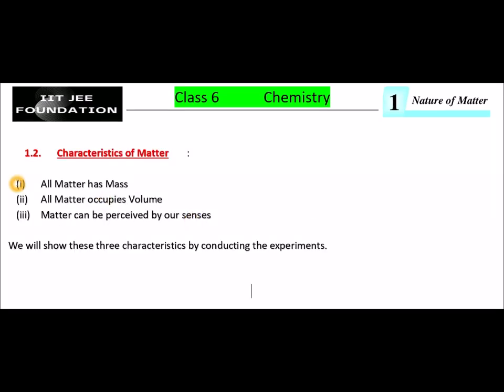There are three characteristics of matter. The first one, all matter has mass. The second one, all matter occupies volume. The third one, matter can be perceived by our senses. We will show these three characteristics by conducting some experiments.